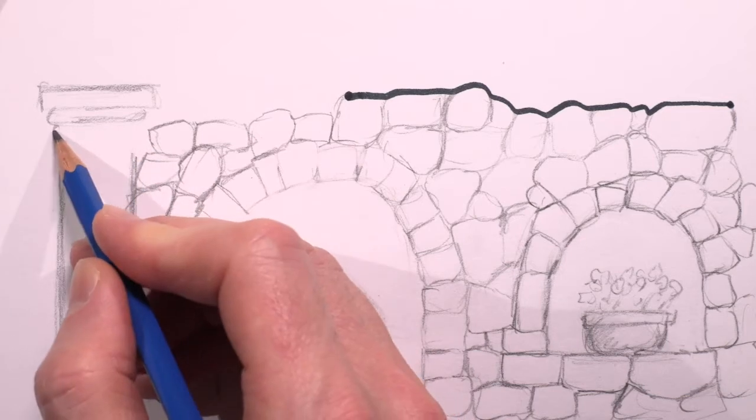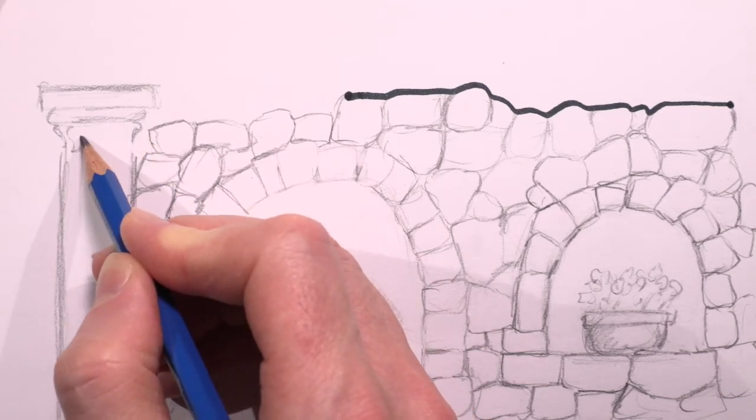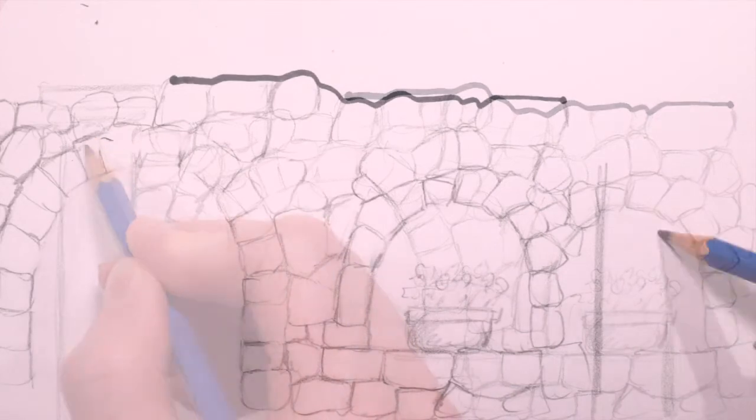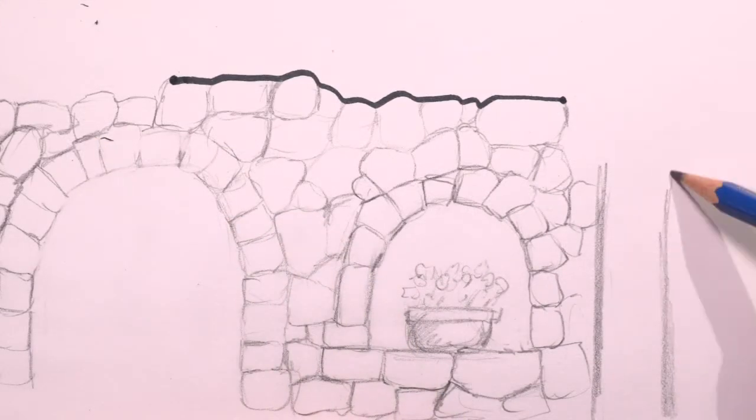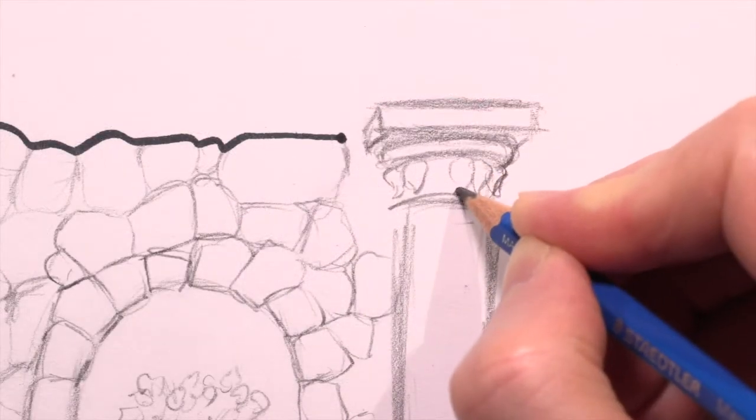It can have some columns. Not to hold anything up. There's no roof on the garden. Just for decoration.